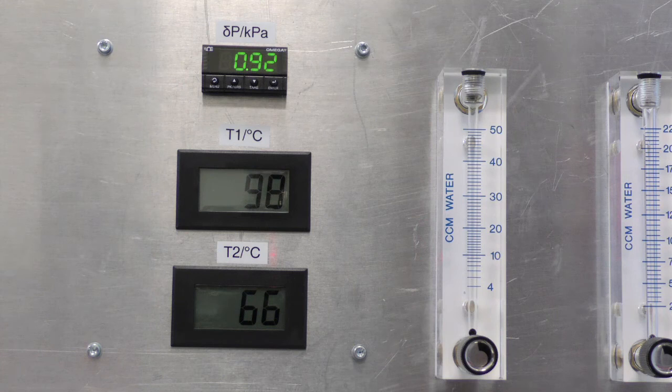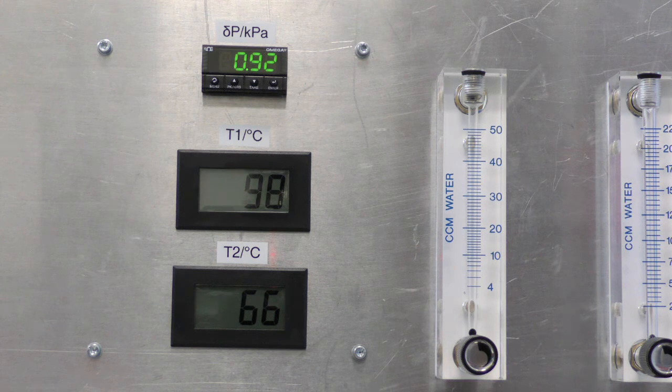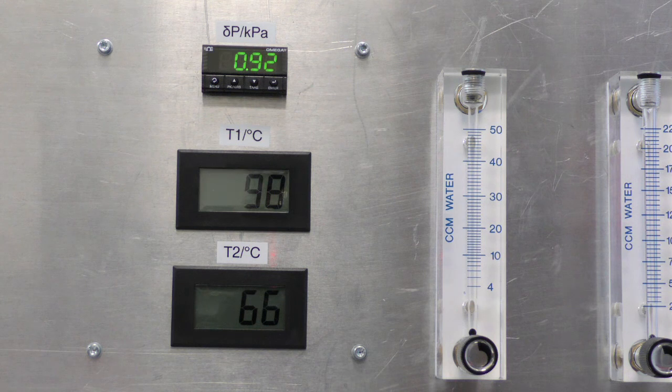Now the system has been operating for some time and is at a steady state. We can read the reboiler temperature, labeled T1 on the panel here, and also the temperature of the vapor leaving the top of the column, labeled T2.